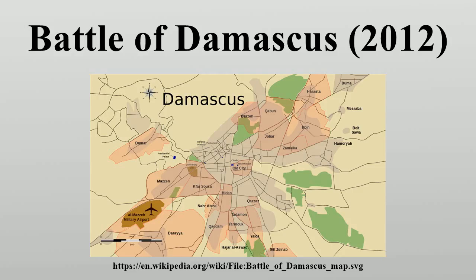After the rebels initially captured half a dozen districts and killed four high-ranking government ministers in a bombing, opposition forces were forced to retreat following a military counter-attack, leaving the army in control of the capital after three weeks of fighting.